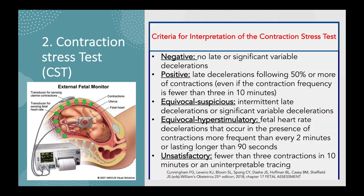The criteria for interpretation of the contraction stress test are as follows: Negative if there are no late or significant variable decelerations. Positive if there are late decelerations following 50% or more of contractions. Equivocal suspicious if there are intermittent late decelerations or significant variable decelerations. Equivocal hyperstimulatory if fetal heart rate decelerations occur with contractions more frequent than every 2 minutes or lasting longer than 90 seconds. Unsatisfactory if there are fewer than 3 contractions in 10 minutes or an uninterpretable tracing.